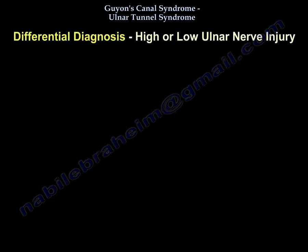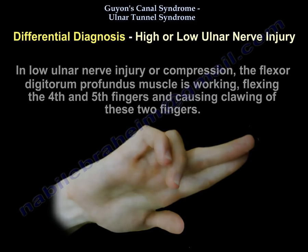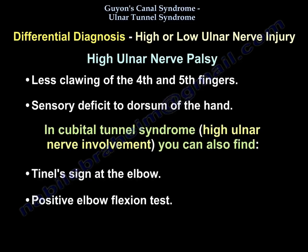What is the differential diagnosis? High versus low ulnar nerve injury: in low ulnar nerve injury or compression, the flexor digitorum profundus muscle is working, flexing the fourth and fifth fingers and causing clawing of these two fingers. There may be a sensory deficit to the dorsum of the hand. In cubital tunnel syndrome, you can also find a Tinel sign at the elbow and a positive elbow flexion test.